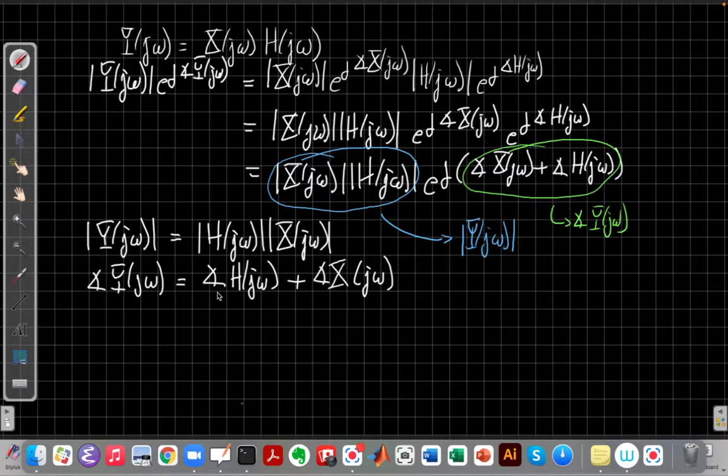Now, like I said earlier, the systems we've mostly done so far in class, I've gone out of my way to make sure all of them had a real h of j omega, so the phase was zero. So you didn't have to worry about the phase, just the scaling. But now we're going to start to get, as we deal with more practical real filters, we need to think about this effect.